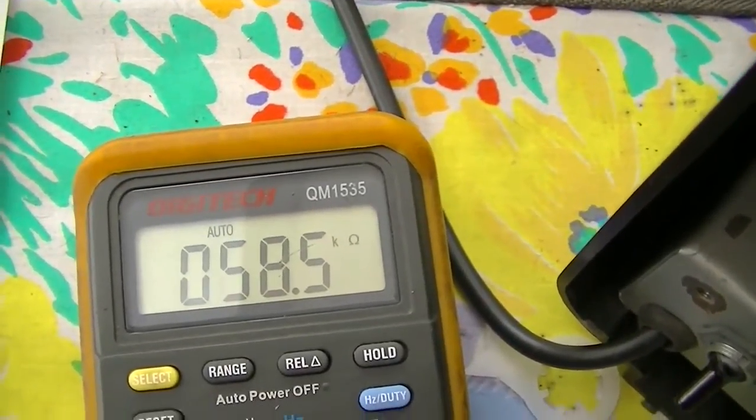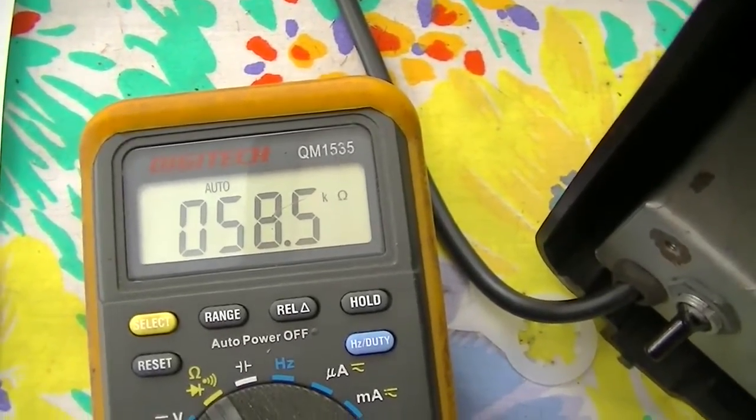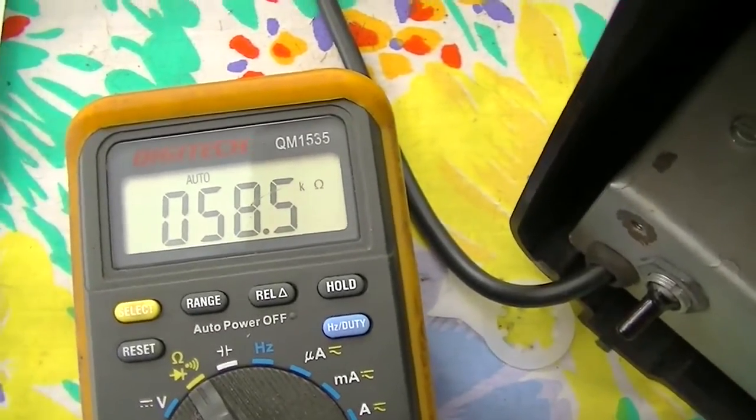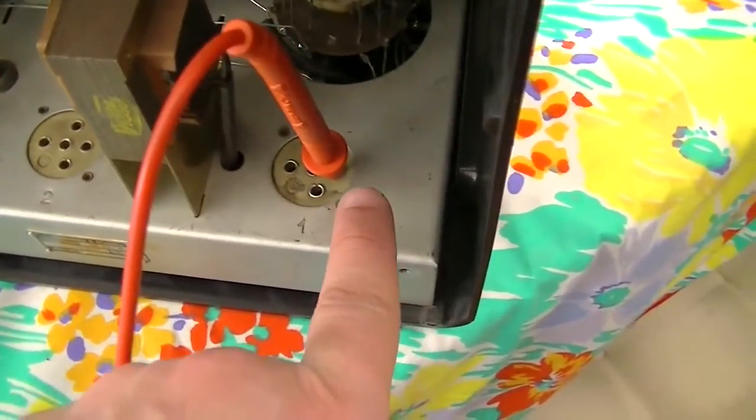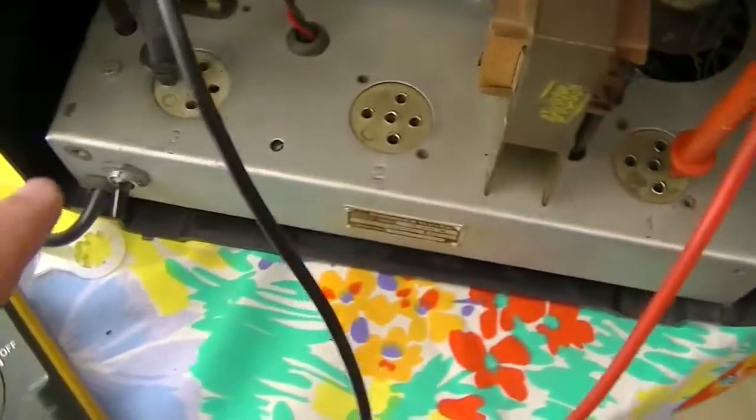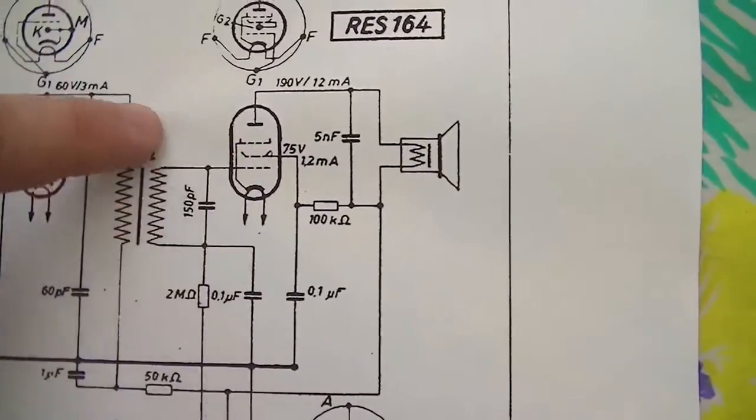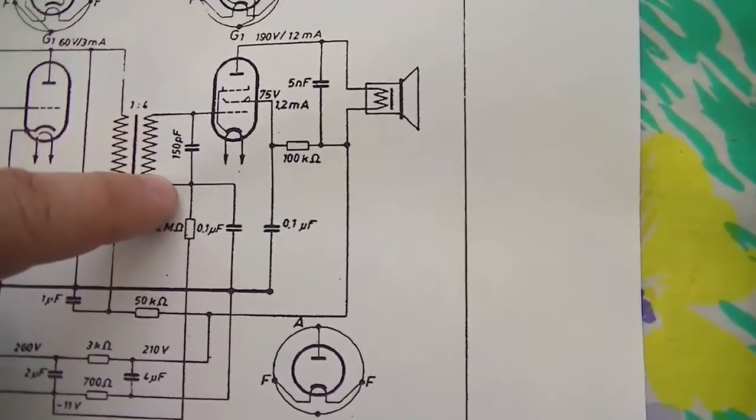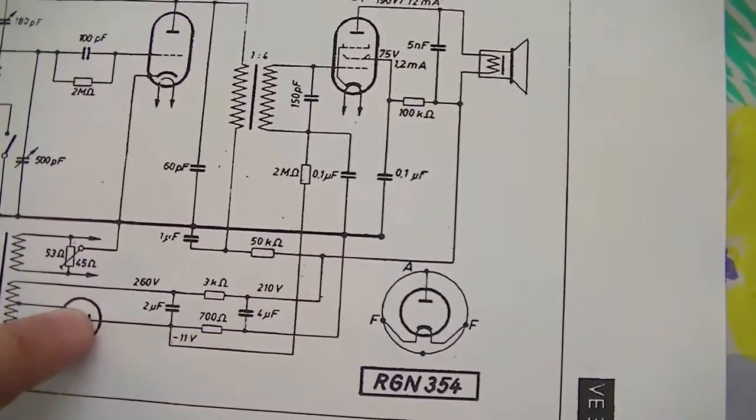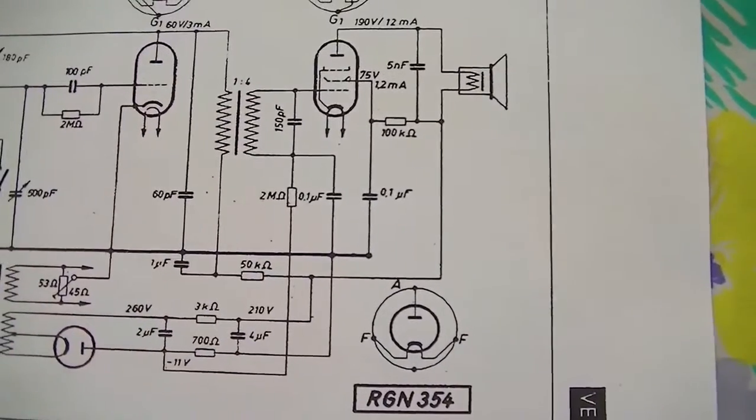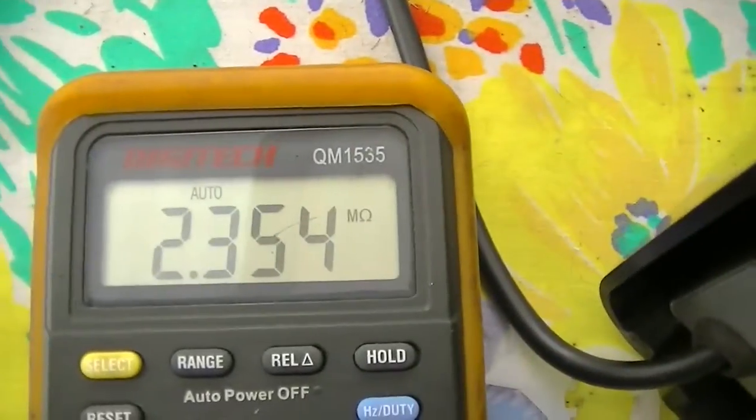Right, time to check out the secondary by hooking it up from the grid of the pentode to the plate of the rectifier. Here we are: grid of the pentode, plate connection of the rectifier, grid of the pentode through the secondary 2 meg to the plate. We expect to see 2 point something meg and we do. So the good news is the interstage transformer is all hunky-dory.